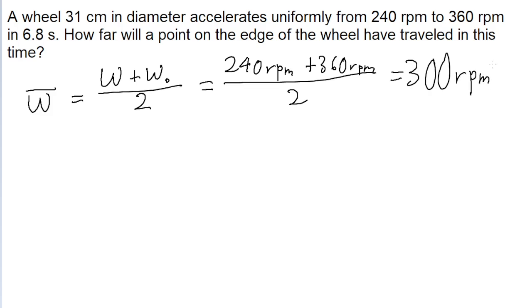So this is the average angular speed, and to find the angle that the wheel travels through, theta, we take that average angular speed and multiply it by the amount of time that it takes to rotate.